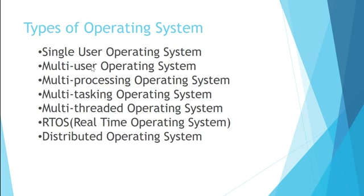These are the different types of operating systems: single user, multi-user, multi-processing, multi-tasking, multi-threaded, real-time operating system, and distributed operating system. We will see each of them.